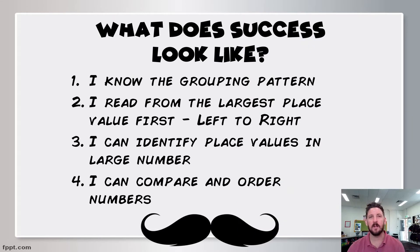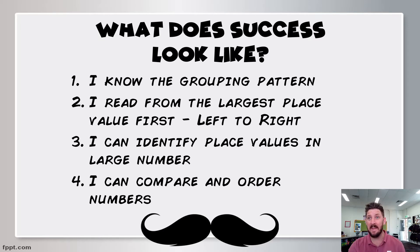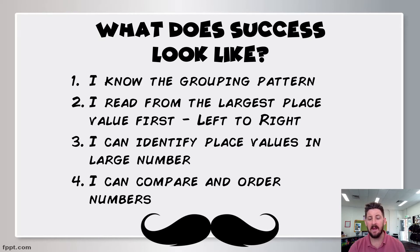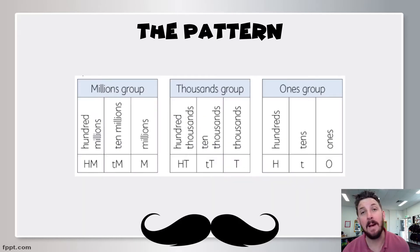What does success actually look like? It's important that we can do these four steps by the end of this concept. The first thing is we need to be able to identify the grouping patterns — we need to know that each of the place values are grouped in threes, and that helps us to read. The second thing is we always read from left to right, so we read from the largest group of place values first. We need to be able to identify the place value in a large number and say exactly which house, which place value it is. And the last thing is we should be able to compare and order numbers by reading from left to right.